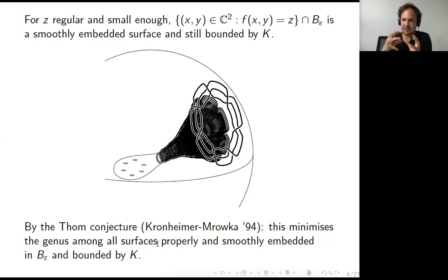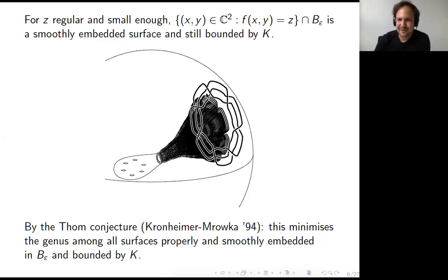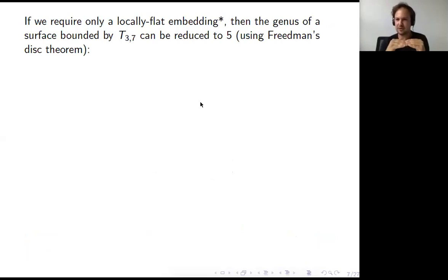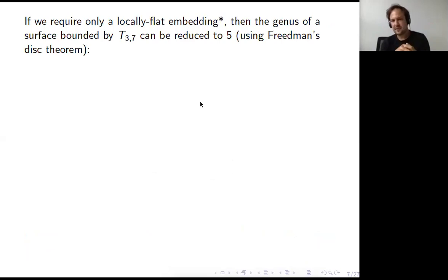Amazingly, this is true — that's the resolution of the Thom conjecture by Kronheimer and Mrowka. If you take this level set of the polynomial, then this level set minimizes the genus among all surfaces properly and smoothly embedded in the ball with prescribed boundary K. Now comes the combo breaker, which is a third category called the locally flat one.